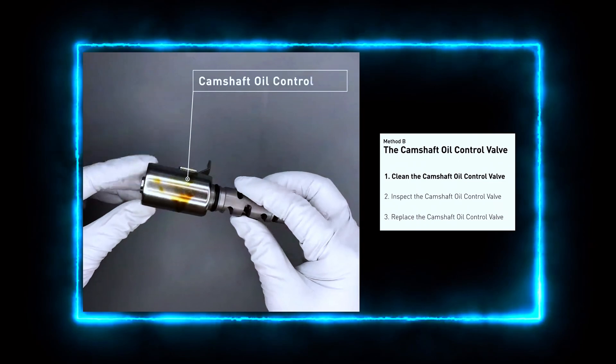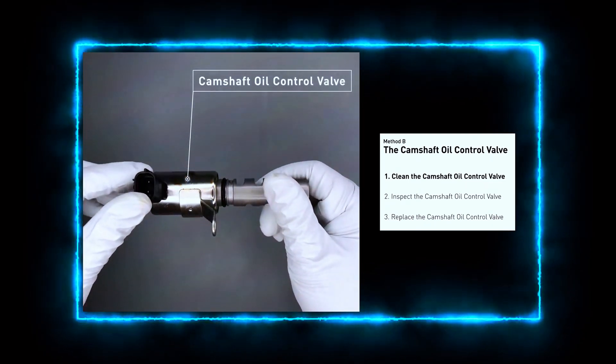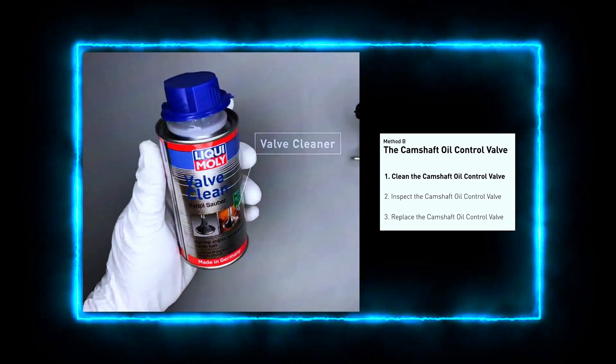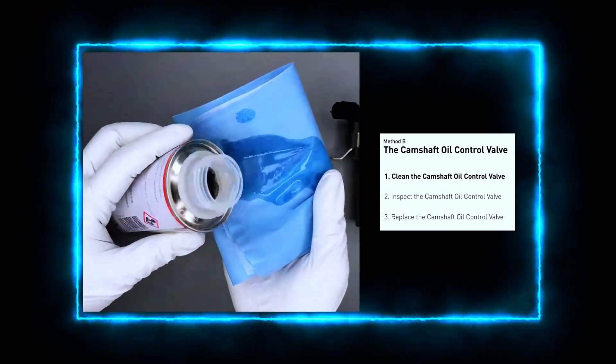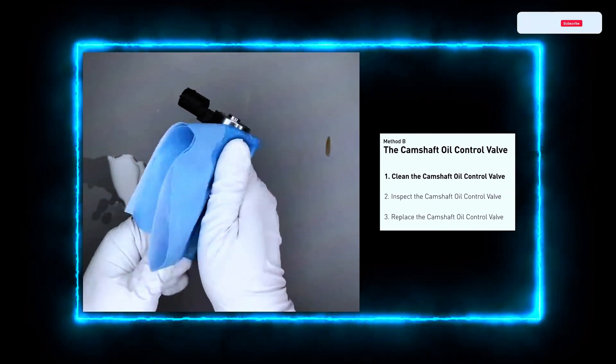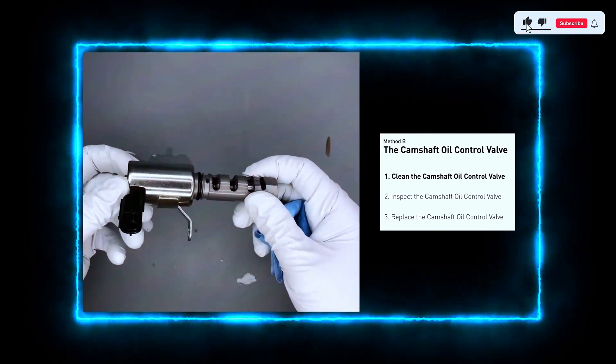Clean the oil control valve using a brake cleaner or electrical contact cleaner spray. Spray the valve thoroughly to remove any dirt or sludge buildup. Be sure to clean the valve's filter and any passages. Wipe it down with a clean cloth and let it air dry for a few minutes.